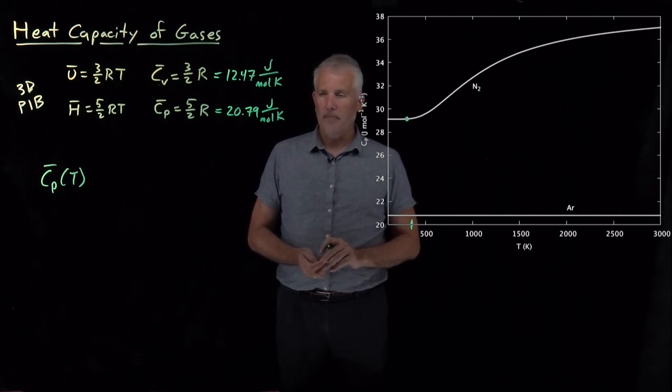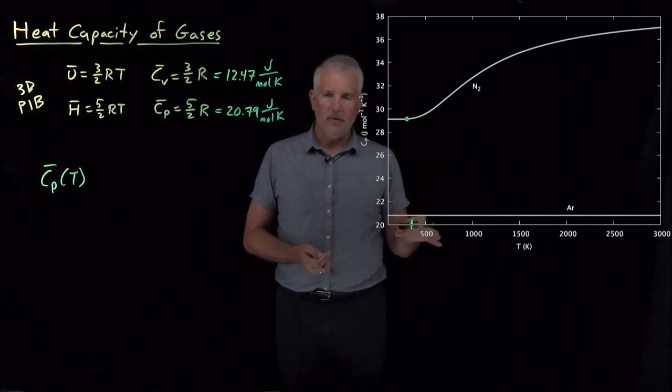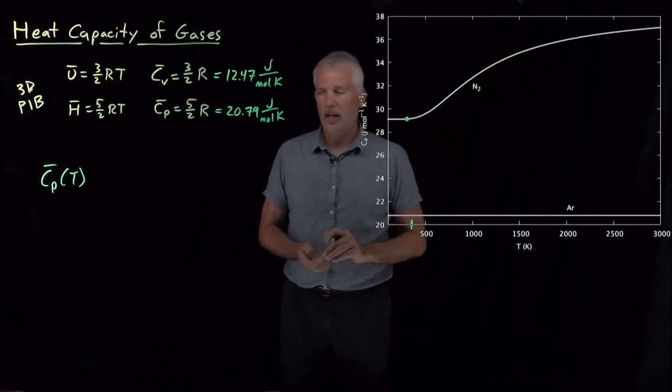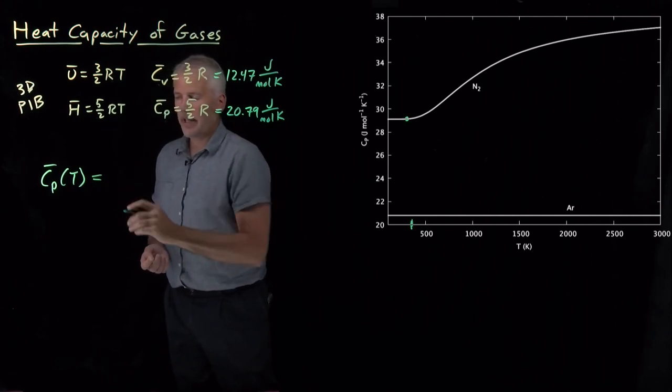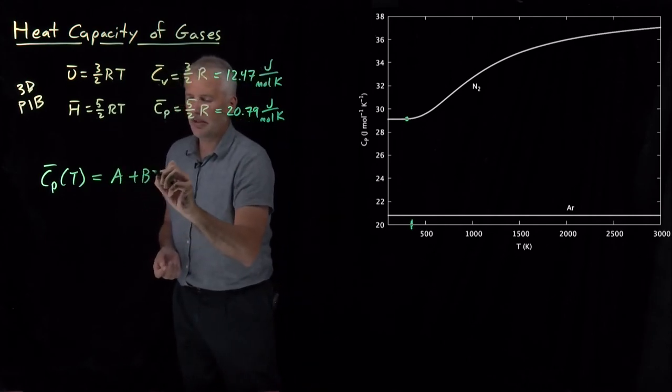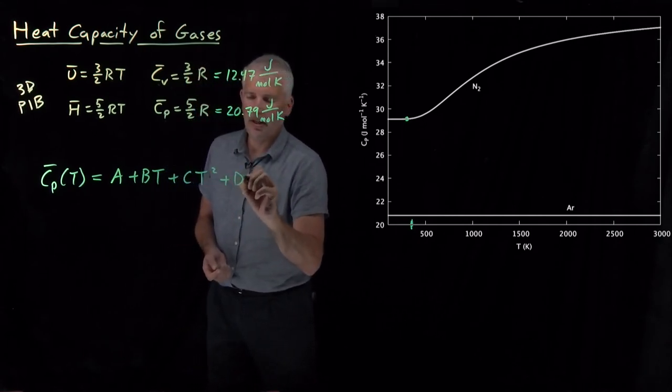We can take two approaches. We can take the empirical approach and say, well, now that we know that heat capacities are different for every gas, we can just look up those values or look up a graph of those values and see how they vary. And one way to do that would be to say, for every gas, to handle the temperature dependence, a pretty common thing to do is to use an empirical equation like this one.